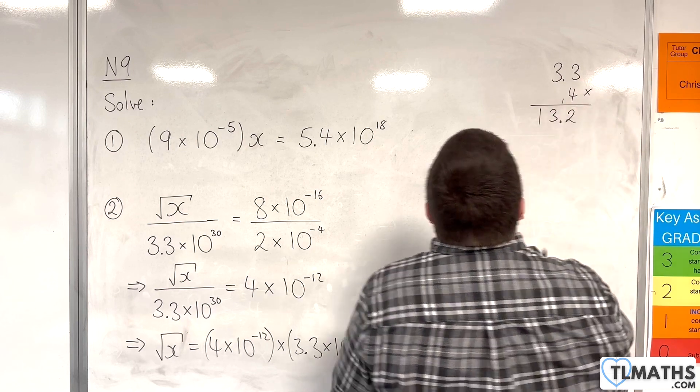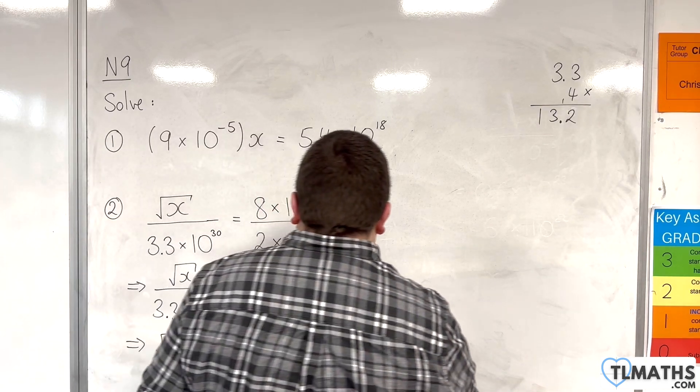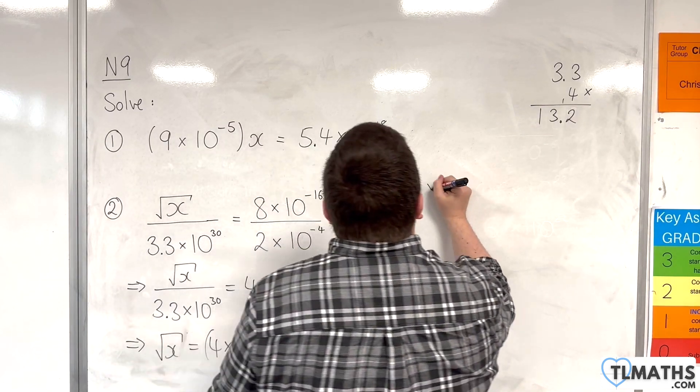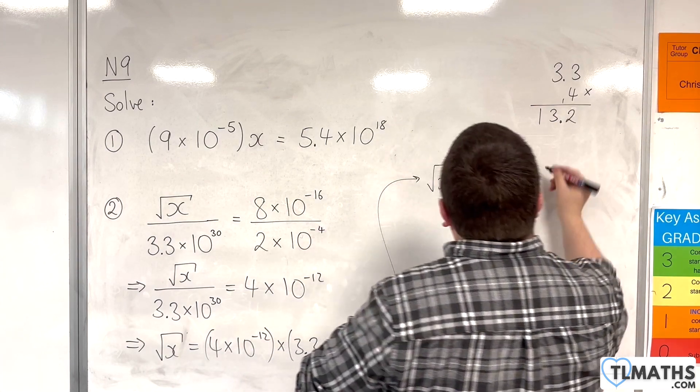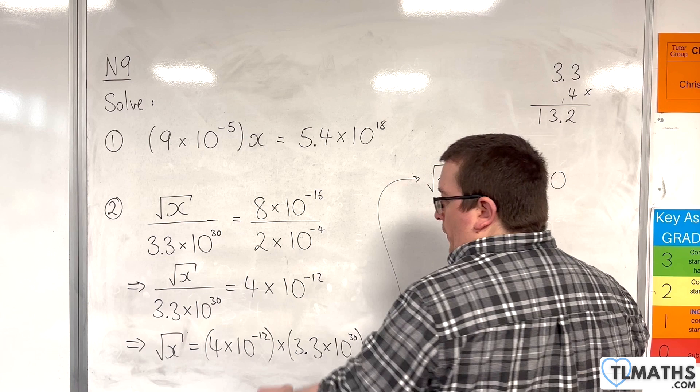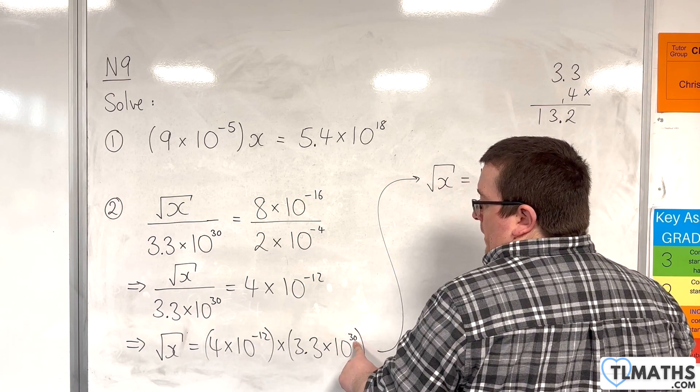Bring in decimal point. So, 13.2. So, that means that root x is 13.2 times by 10 to the power of, so we've got minus 12 plus 30, which is going to be 18.